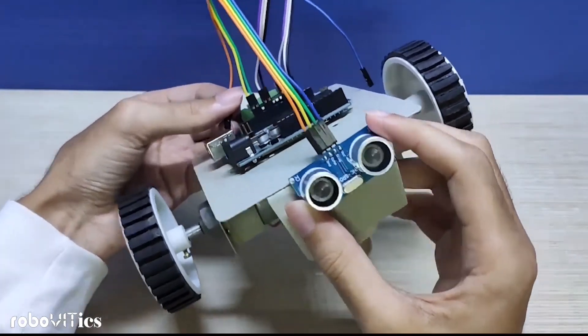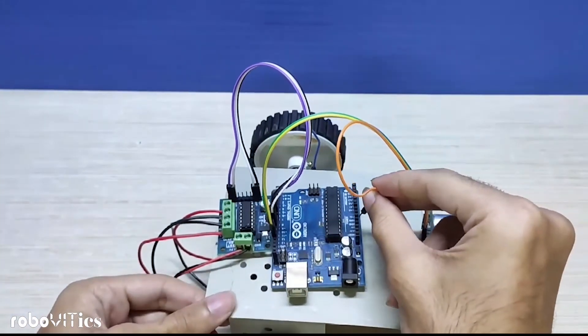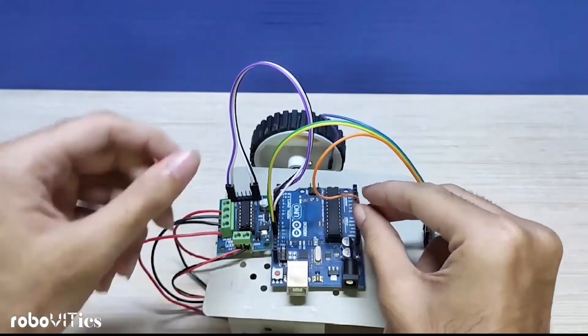Based on the connections of the VCC and ground on the ultrasonic, we now push the VCC and ground wires into the VCC and ground pins of the Arduino board.